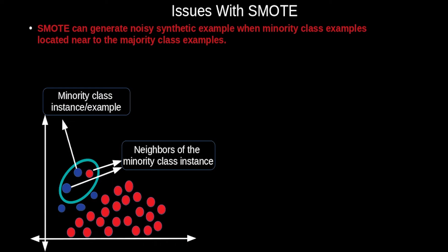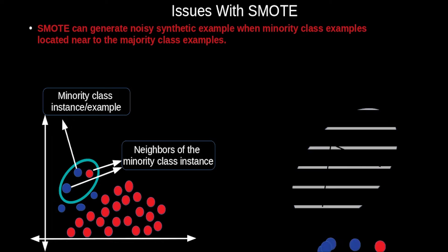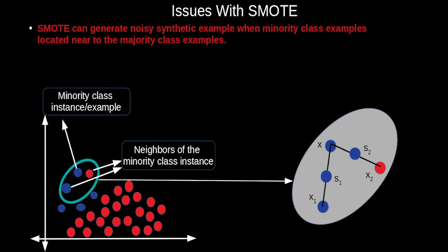However, there are some issues with SMOTE. SMOTE can generate noisy synthetic examples when minority class examples are located near majority class examples. For instance, x and x1 belong to the minority class but x2 belongs to the majority class. S2, generated by interpolating minority class example x with majority class example x2, is not a good representative of the minority class.